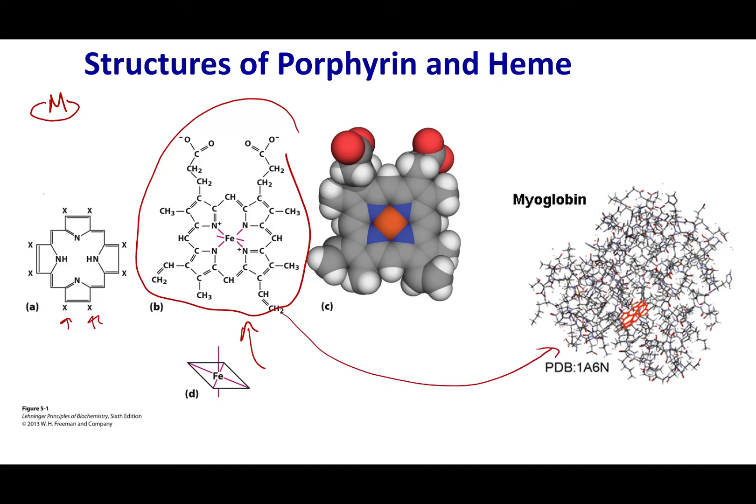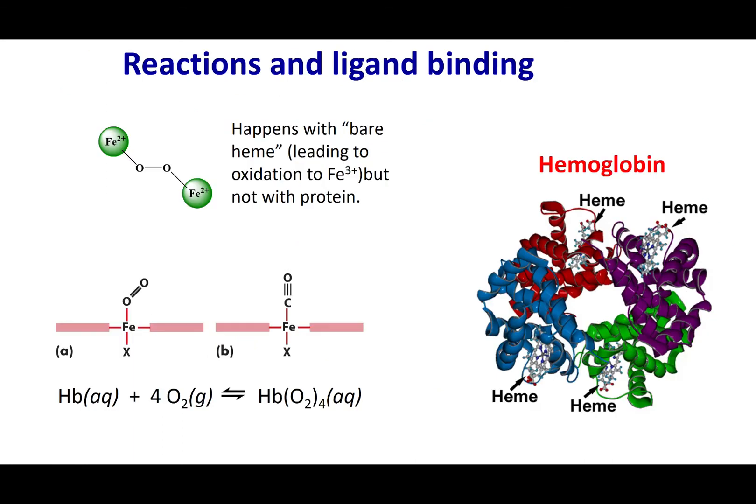And you can see the heme structure highlighted in red here on the right hand side and the rest of the protein made out of thousands of atoms. However, it is this heme structure which is carrying out the most important chemistry.